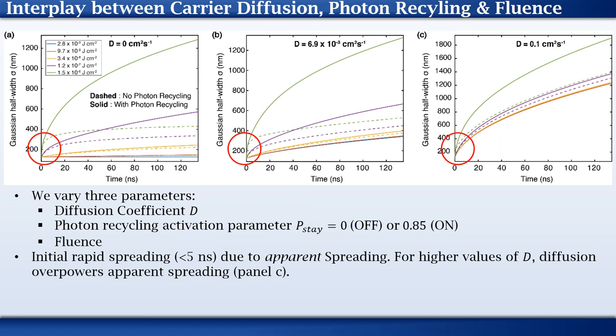When photon recycling is off, there is a rapid spreading at early times due to higher order recombination. However, this later stabilizes. Our results primarily show a clear enhancement of spreading when photon recycling is turned on for low values of D. Increasing the fluence translates to more spreading irrespective of photon recycling. However, when photon recycling is combined with higher fluence, there is a disproportionate increase in spreading.